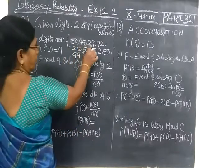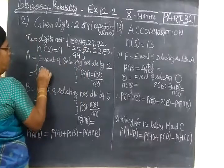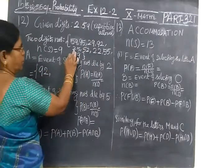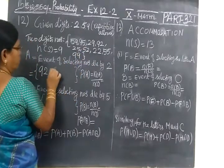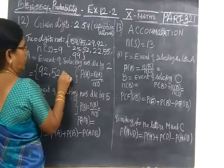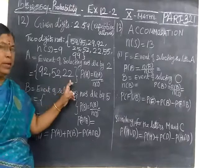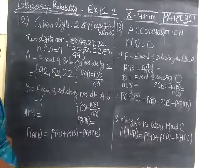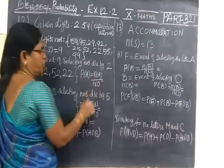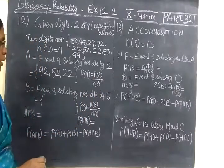So 59, 95, 29 not possible. Take 92, then 25 not possible, 52, then 22. So these three 2-digit numbers are divisible by 2. So P(A) equal to we know the formula N(A) by N(S).